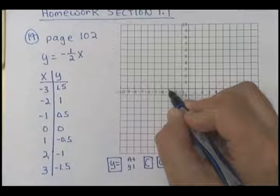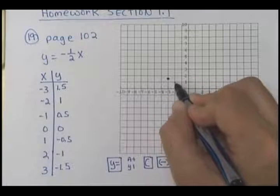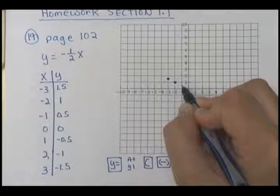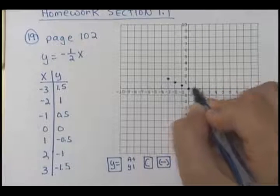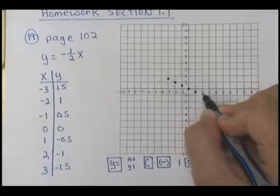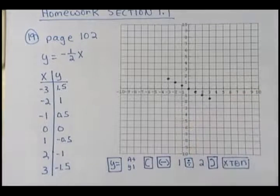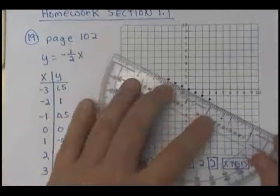Negative 3, up 1.5, negative 2, 1, negative 1.5, 0, 0, 1, a negative half, 2, negative 1, and 3, negative 1.5. Does everybody see our line here?